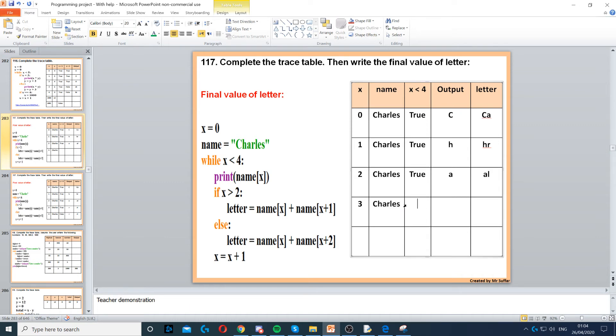Name stays as Charles. Is 3 less than 4? That's true. Now position 3 is the letter R. Then it says if X is greater than 2, so that's true because 3 is greater than 2. So letter is equal to now name X, which is R, plus name X plus 1. So the next position after R is L, so we need the L as well.